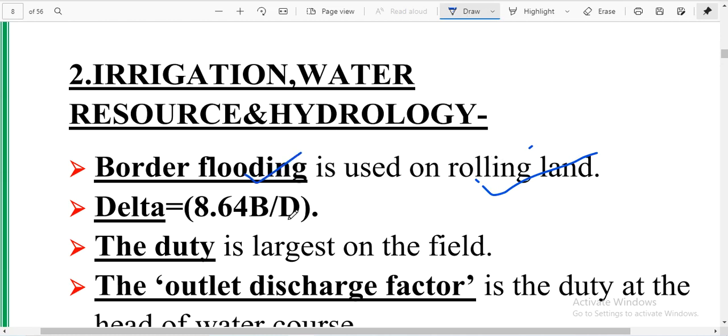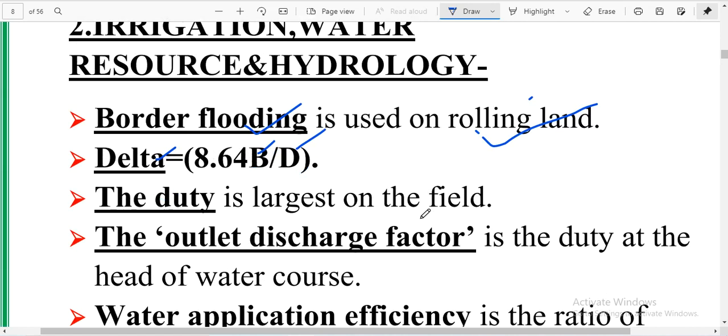The delta duty relationship: if you want to know the delta, it is equal to 8.64B by D. If you want to know the unit is fixed, that will be our next slide. What are the duty? The duty is the largest on the field.